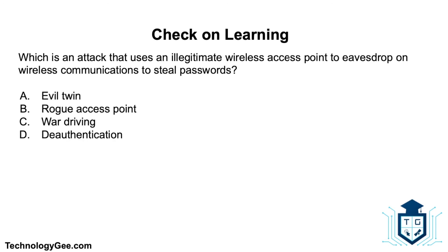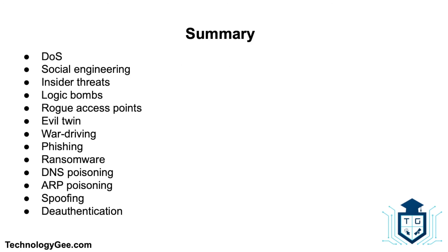Next question: which is an attack that uses an illegitimate wireless access point to eavesdrop on wireless communications to steal passwords — an evil twin, a rogue access point, war driving, or de-authentication? The correct answer is an evil twin. An evil twin is an access point set up explicitly to capture packets and gain access to usernames and passwords. A rogue access point is an access point someone sets up on the network without permission, whether for illegitimate reasons or simply because they didn't know the rules.